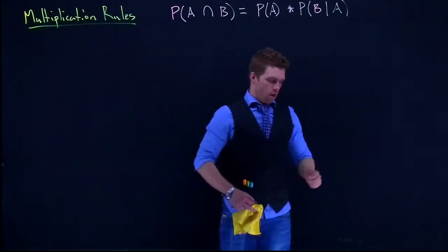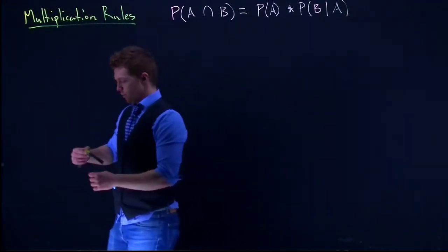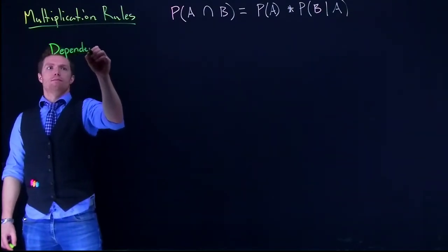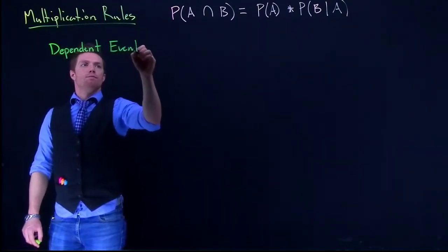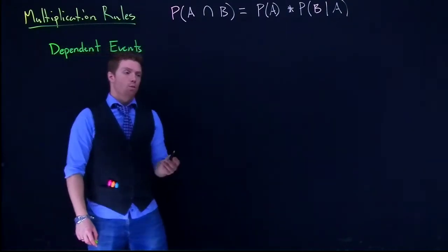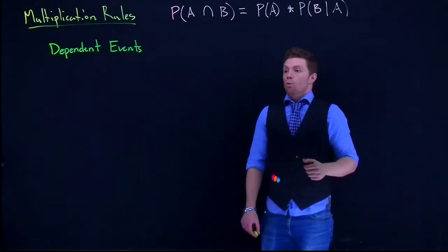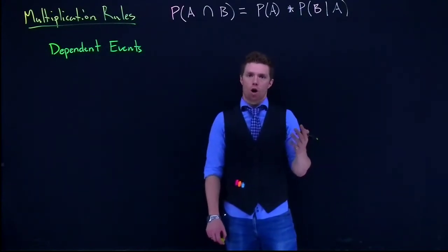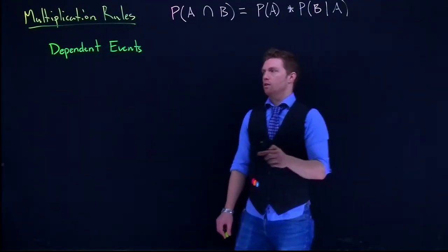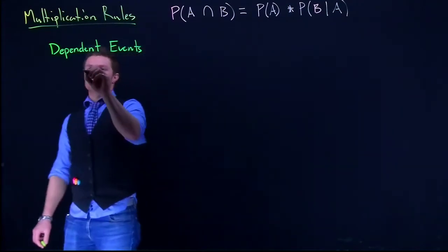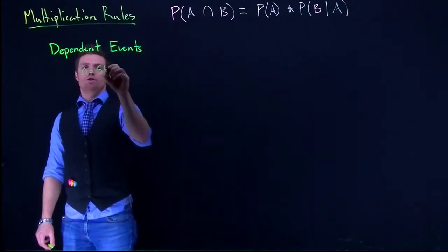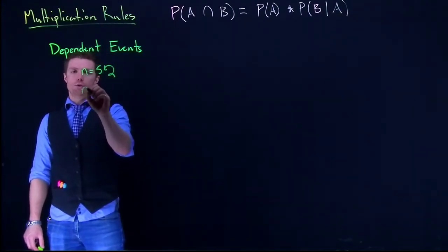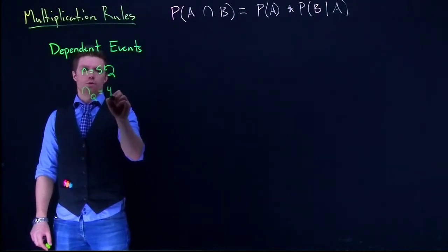Okay, so let's start off with dependent events. The classic one is what's the probability that we draw two cards and that both of them are queens? So we've got a standard deck of cards. In the deck of cards, n is going to be equal to 52 and the number of queens, n queen is equal to 4.